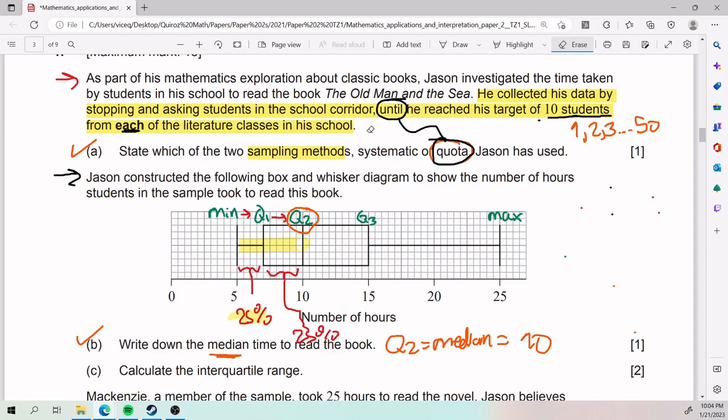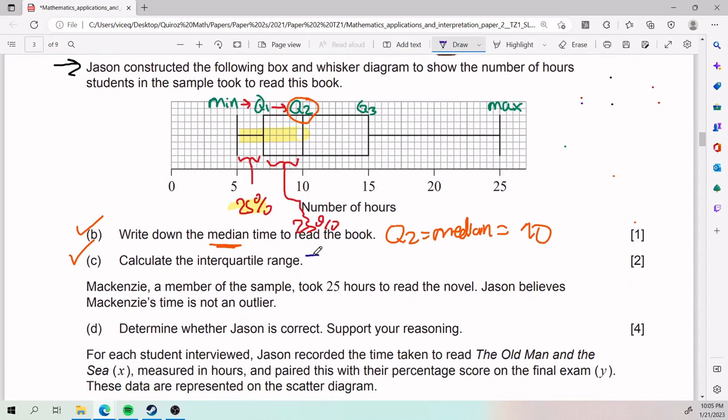For part C, they ask us to calculate the interquartile range. The formula for this is actually in your formula booklet. So if you don't recall it, please check there. Get familiar with it. It's very important to get familiar with the formula booklet. It's one of the few things you will have when you enter the IB exam. The interquartile range, also called IQR, is going to be Q3 minus Q1. So Q3 in this case is 15. Q1 is 7. So 15 minus 7 is going to be 8. Your interquartile range is 8.